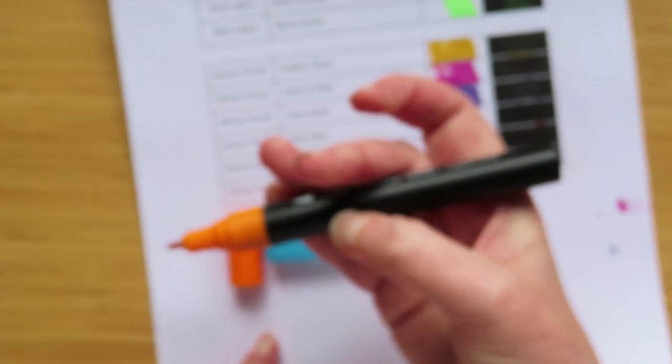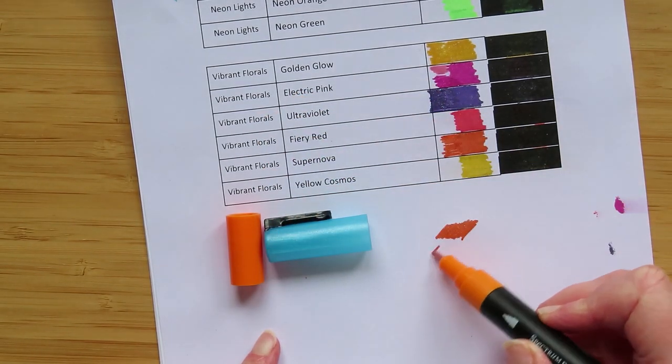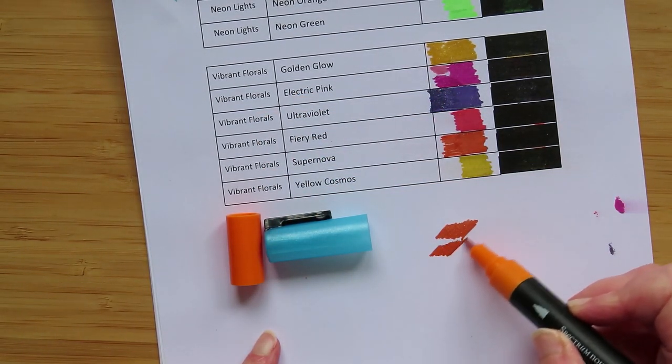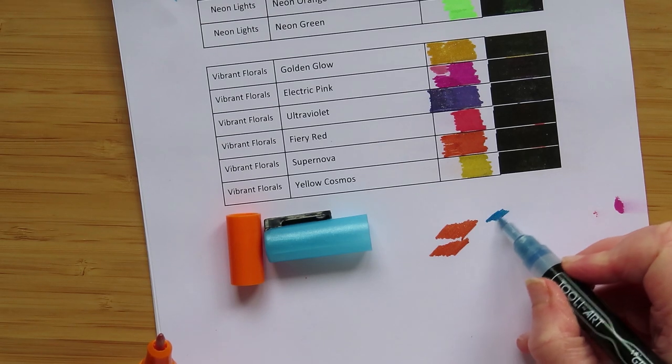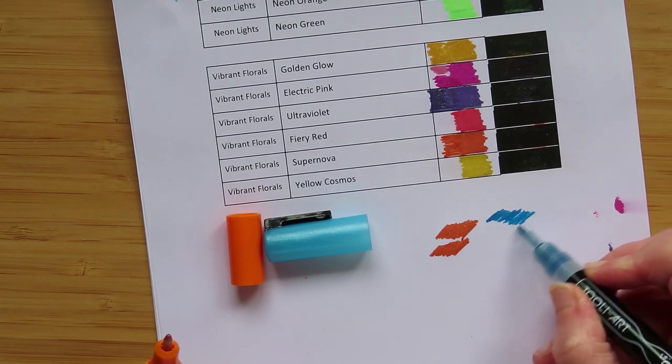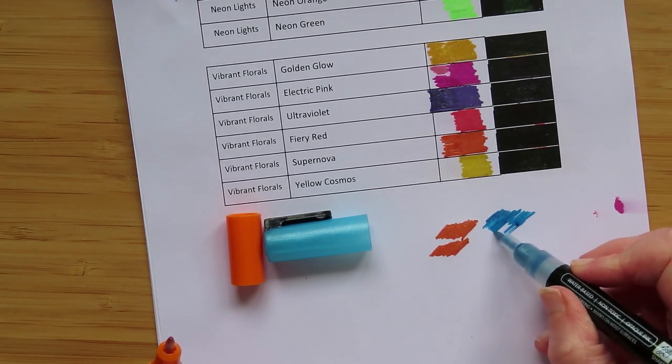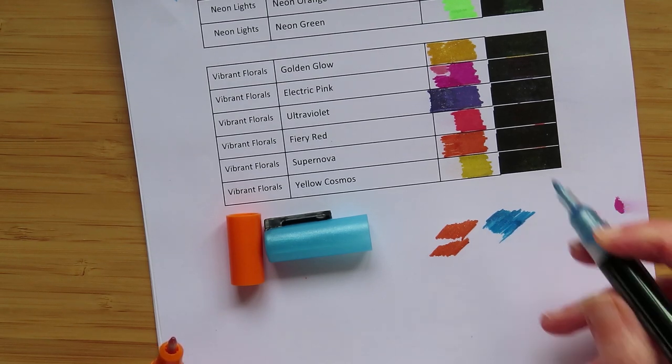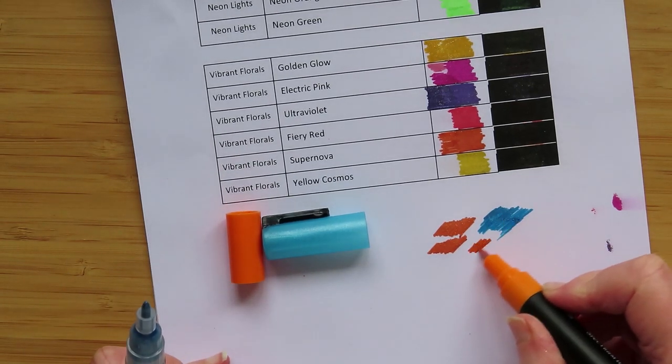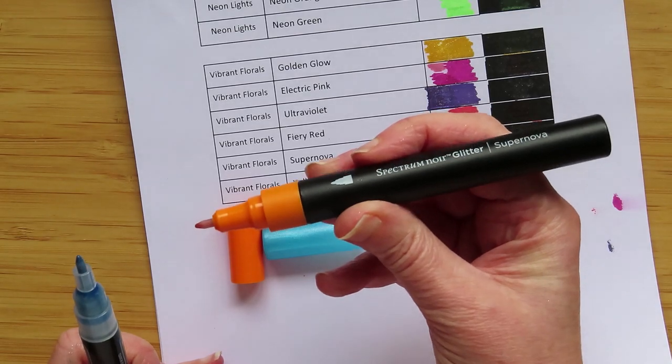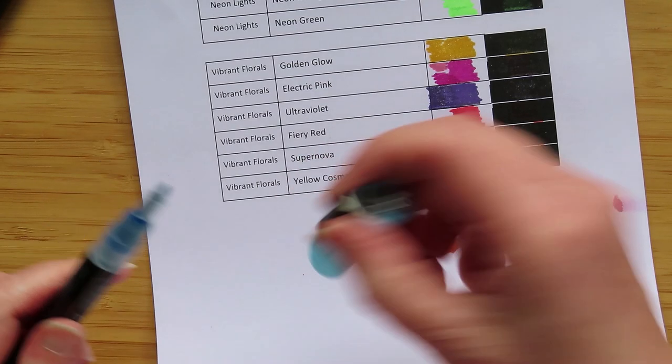Using them, let's do one after the other. They feel really smooth, the Spectrum Noir ones. They do actually feel really smooth. And then the Tulip Art ones, not much in it to be honest, but a bit rougher. They do feel a bit rougher, a little bit more hard work. I think the juice in these ones feels a little bit more free-flowing.